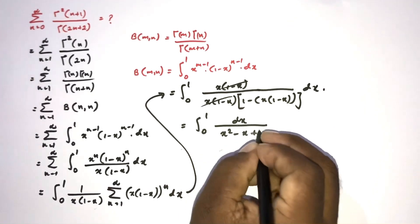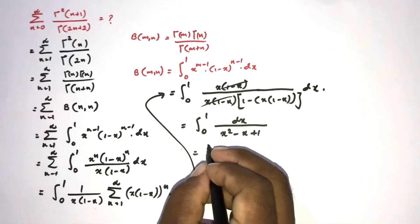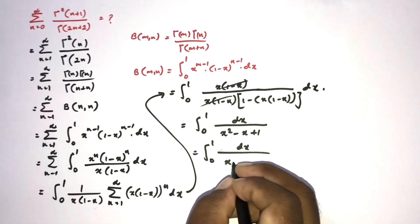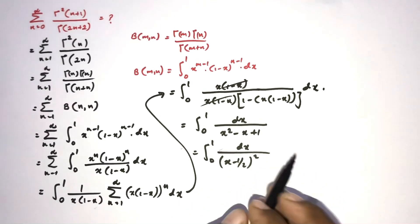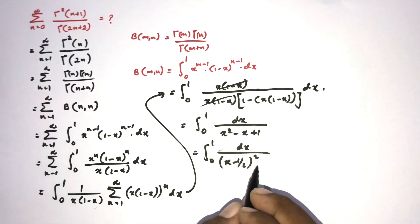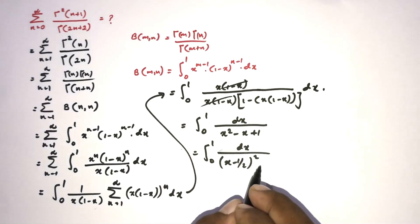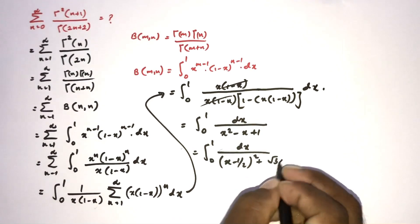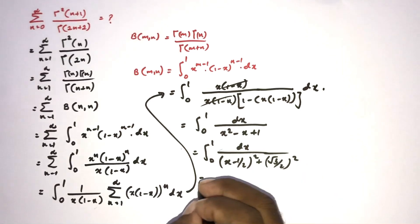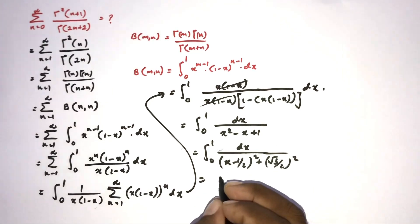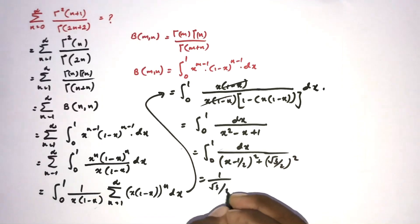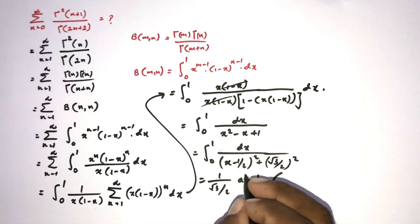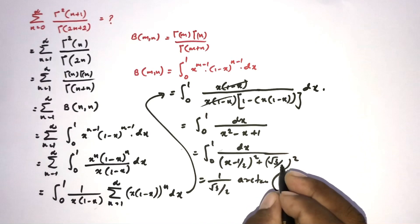Simplifying the denominator: 1 minus x(1 minus x) gives x squared minus x plus 1. We complete the square: (x minus 1/2) squared plus 1 minus 1/4, which is (x minus 1/2) squared plus 3/4. We recognize this as an arctan form, so the integral becomes 1 over (sqrt(3)/2) times arctan of (x minus 1/2) over (sqrt(3)/2).